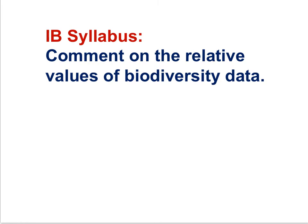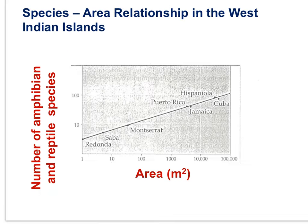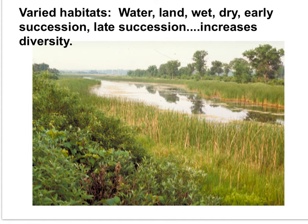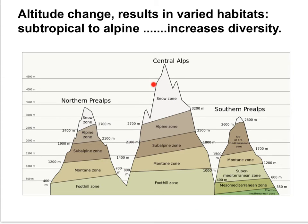Here is an IB syllabus statement: comment on the relative values of biodiversity data. You should be able to comment based on the number of different species and the relative abundance of species in the habitat. Larger areas, climax forests, and large changes in altitude all serve to increase local diversity. Climax forests with canopy, understory, and floor species provide huge numbers of different niches. Varied habitats — water, land, wet, dry, early and late succession — all increase diversity. Altitude change results in varied habitats from subtropical to alpine.